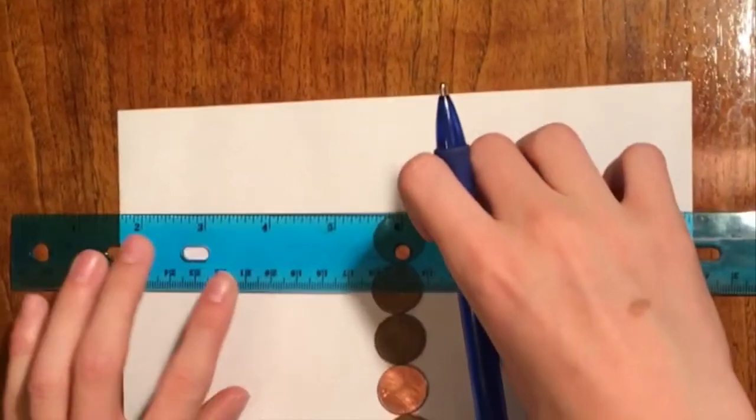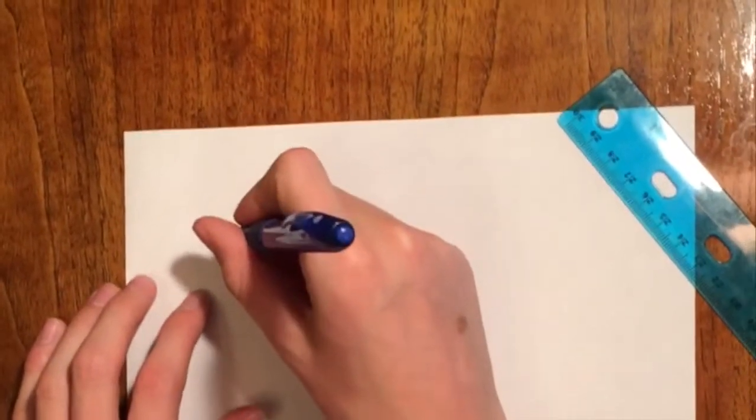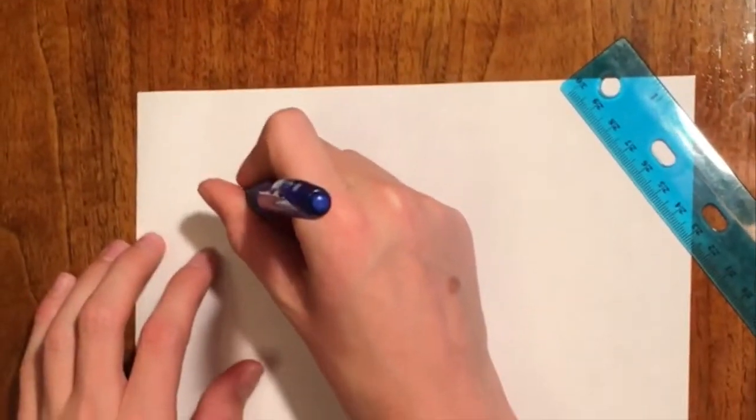On the other end of the paper, at the 40th penny, on the very edge, draw a line and label it Pluto.